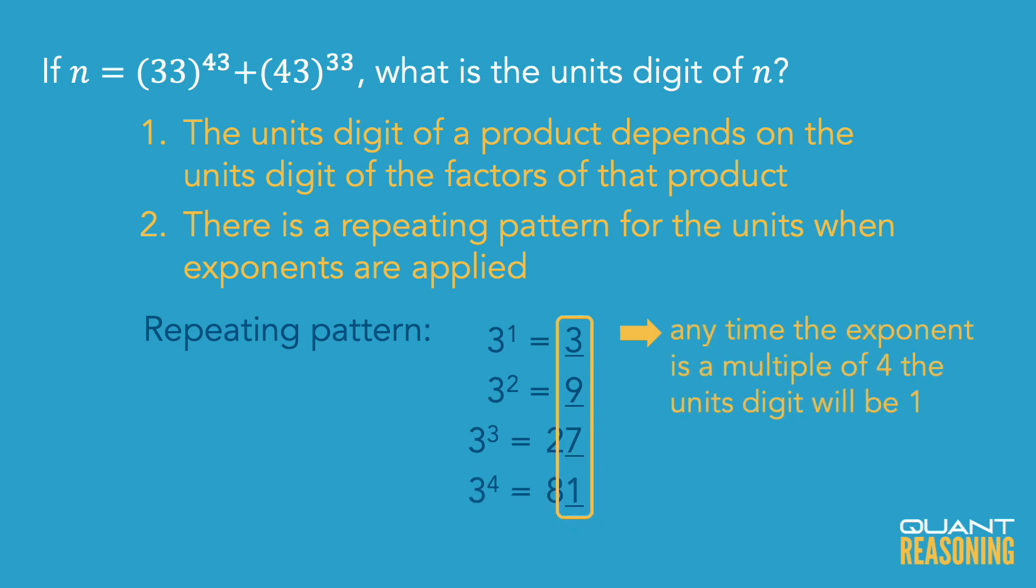Now if the remainder of the exponent in the context of divisibility by 4 is 1, then the units digit is 3. And if the remainder is 2, the units digit is 9, and if the remainder is 3, then the units digit is 7.